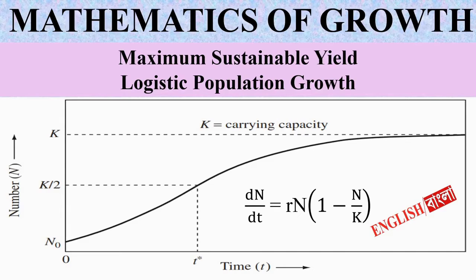Earlier, I made three videos on population growth. In my fourth video today, I discuss about the maximum sustainable yield of a population of an ecosystem. Before that, we just revisit the logistic growth.